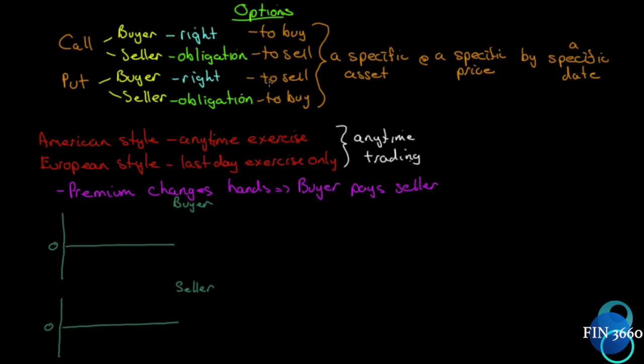This involves a specific asset called the underlying asset at a specific price called the strike or exercise price. Notice it's not called the delivery price—the terms strike price and exercise price have meaning with options but not so much with futures and forwards. This occurs by a specific date, and rather than call it the delivery date, we call it the expiration date.